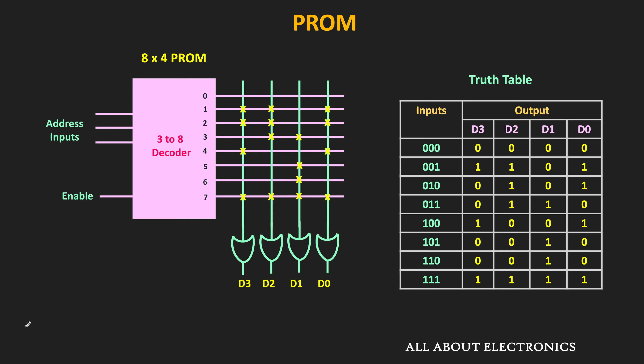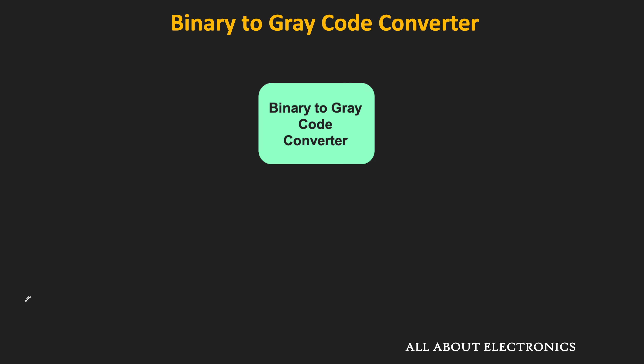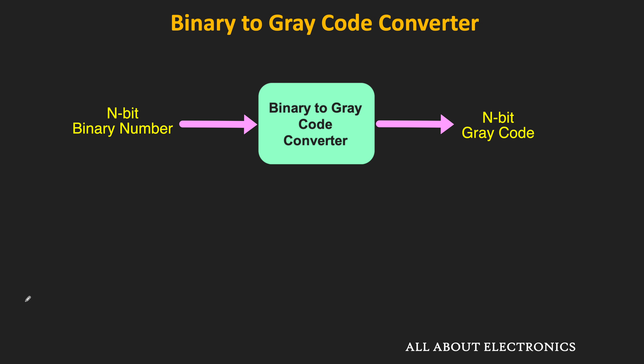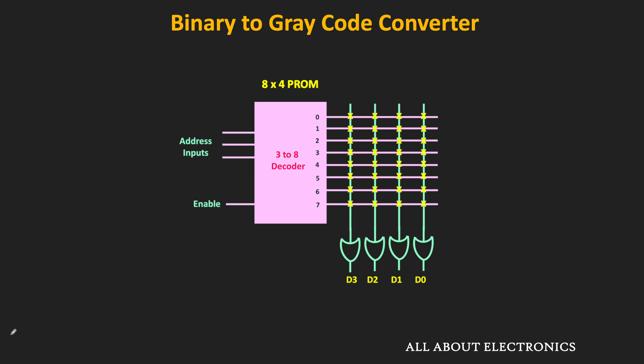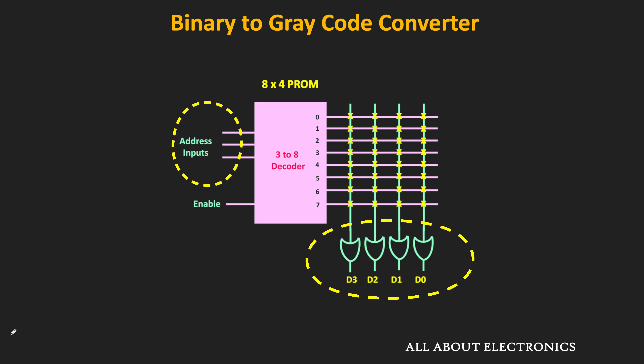Similarly, if we want to implement multi-output functions, they can be easily implemented using this PROM. For example, if we want to implement the binary-to-gray code converter, it can be easily implemented using this PROM. As you know, this binary-to-gray code converter takes an n-bit binary number as input and gives an n-bit gray code as output. So if we want to implement a 3-bit binary-to-gray code converter, then using this 8x4 ROM it can be easily implemented, because this 8x4 PROM has 3 inputs and 4 outputs. Using the 3 address inputs and any 3 of the OR gate outputs, it is possible to implement the code converter.